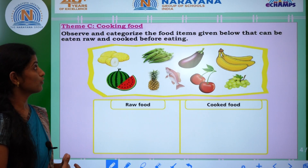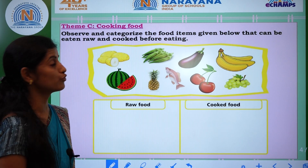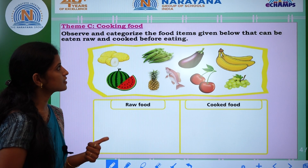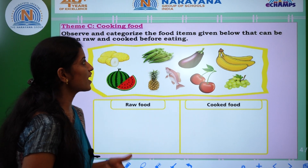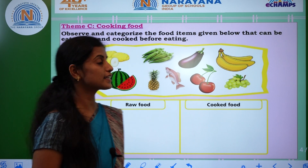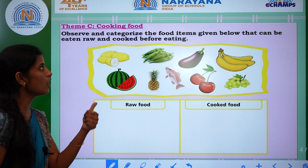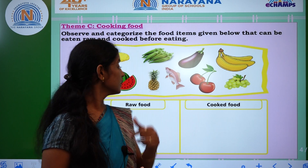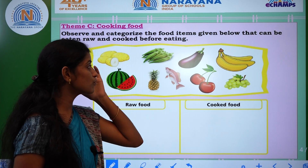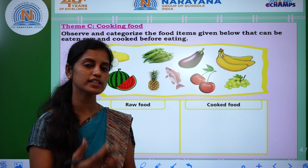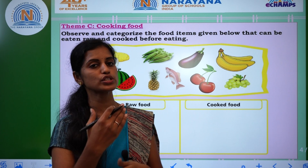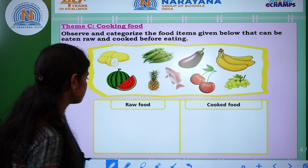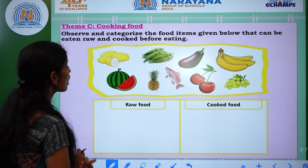Theme C — Cooking Food. We will see the categorized food items given below that can be eaten raw and those that need to be cooked before eating. Fill in the details of food items — which food items can you eat raw and which food items do you eat cooked? You can find out in the table. So, raw food.